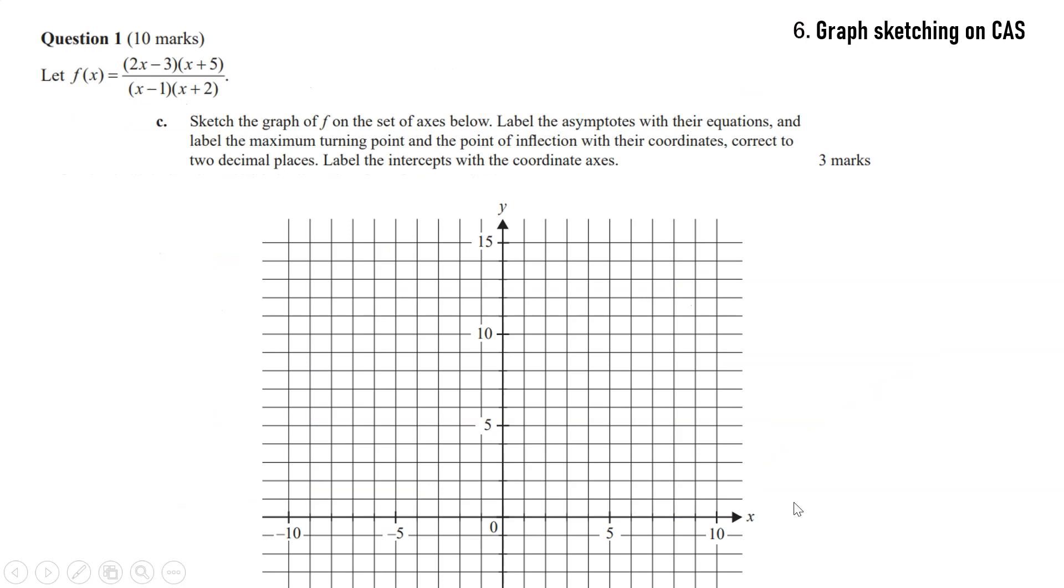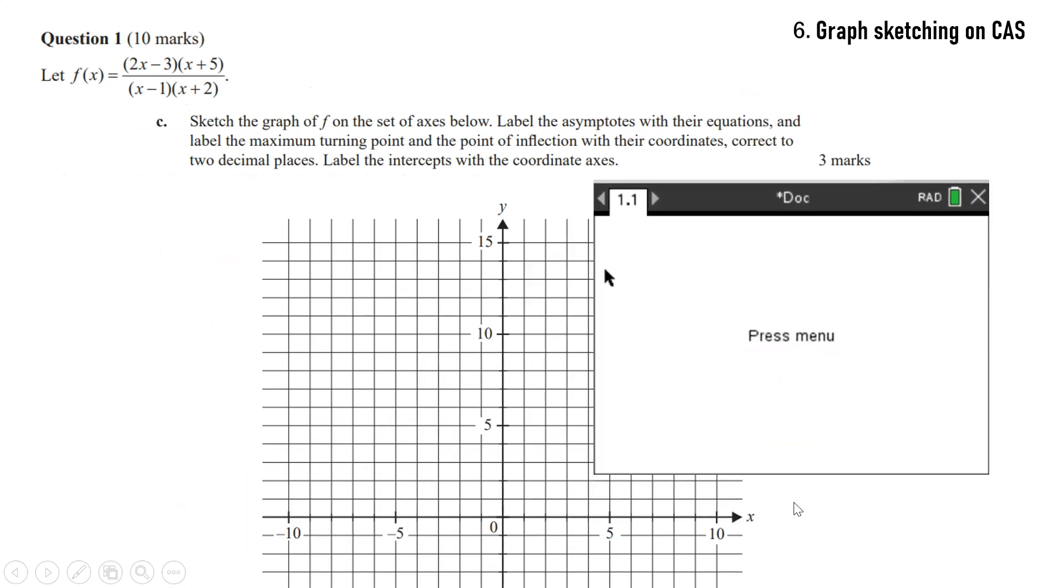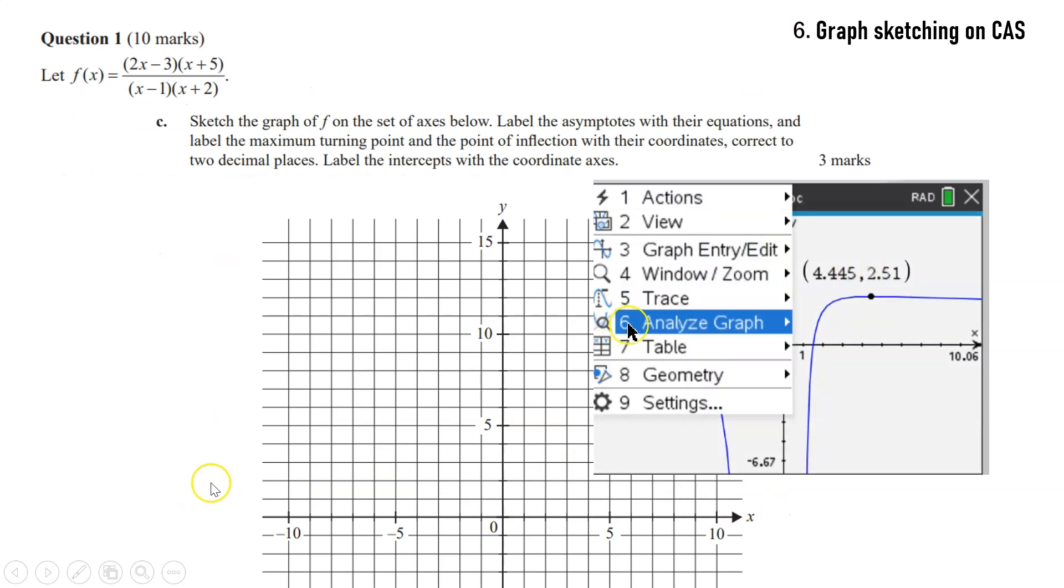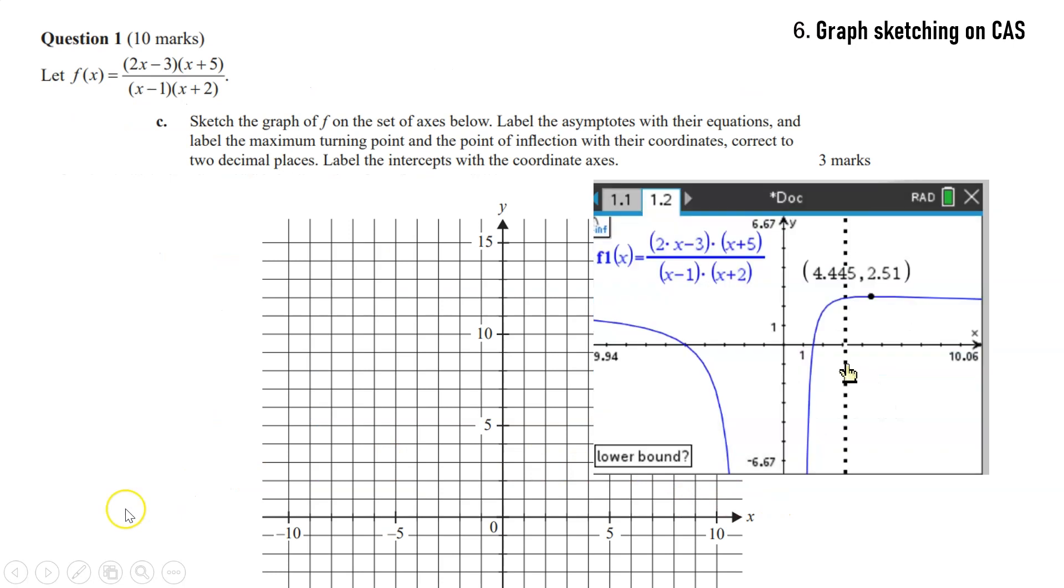So with this question, it's a graph sketching question, but it's exam two, so we have our CAS calculator. So we type it in the graphs page. Just make sure to type it in correctly and check that you don't make any errors when typing the actual function in. We get our graph and we got to find the local maximum. So analyze graph maximum. We can sort of see where it is there, just locate the coordinates.